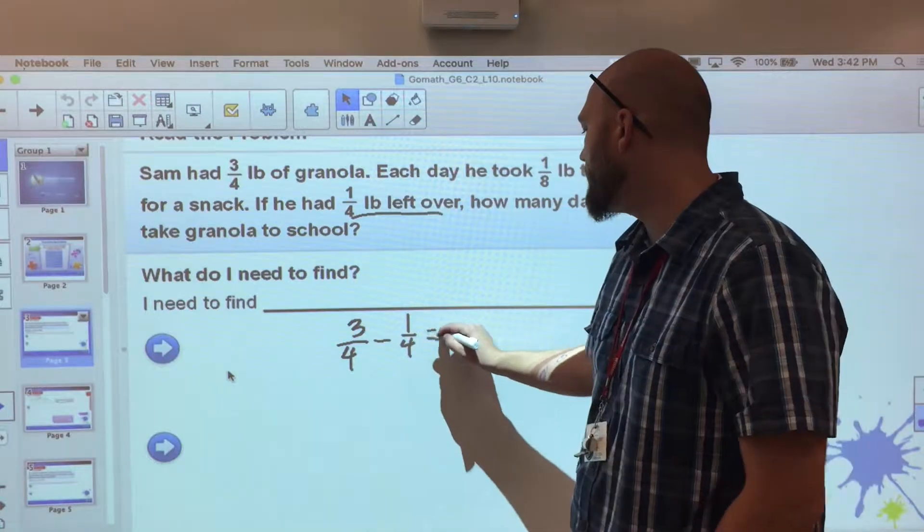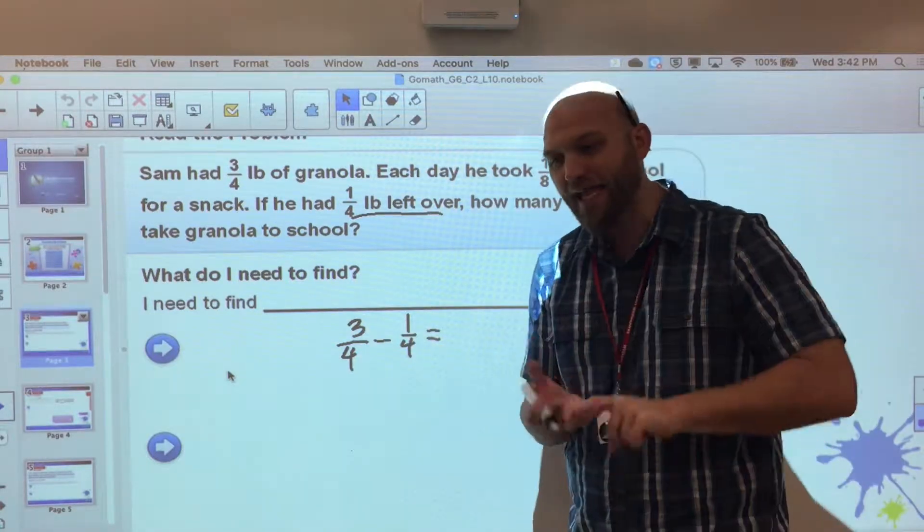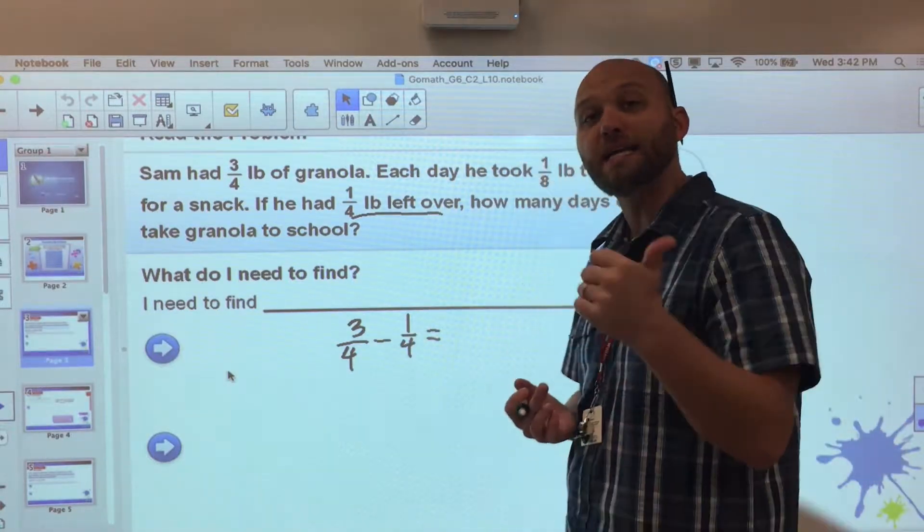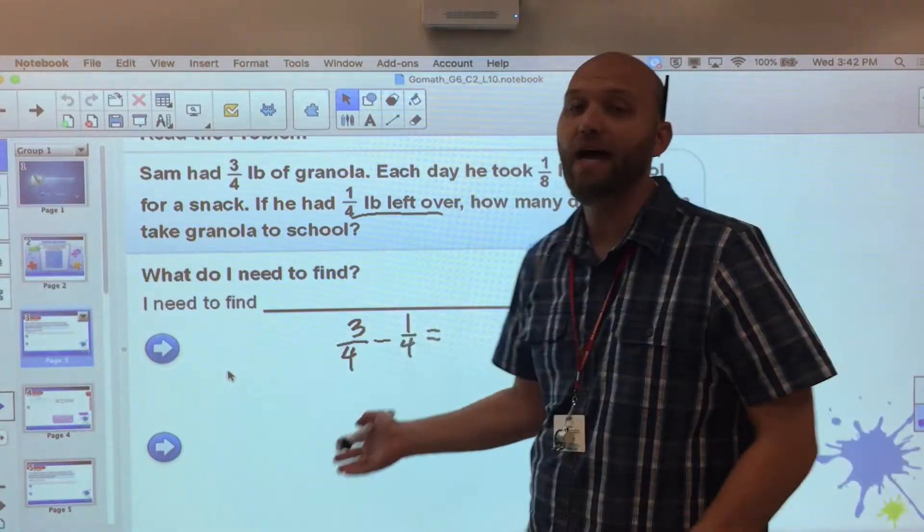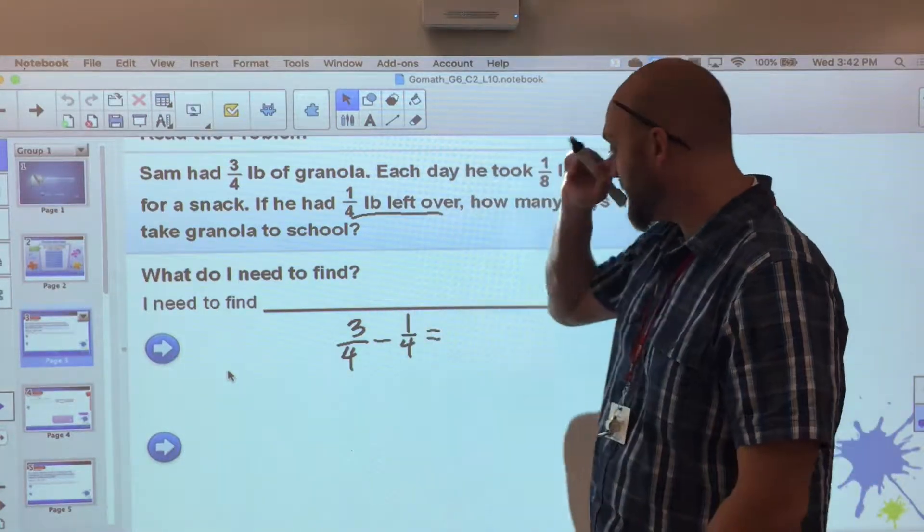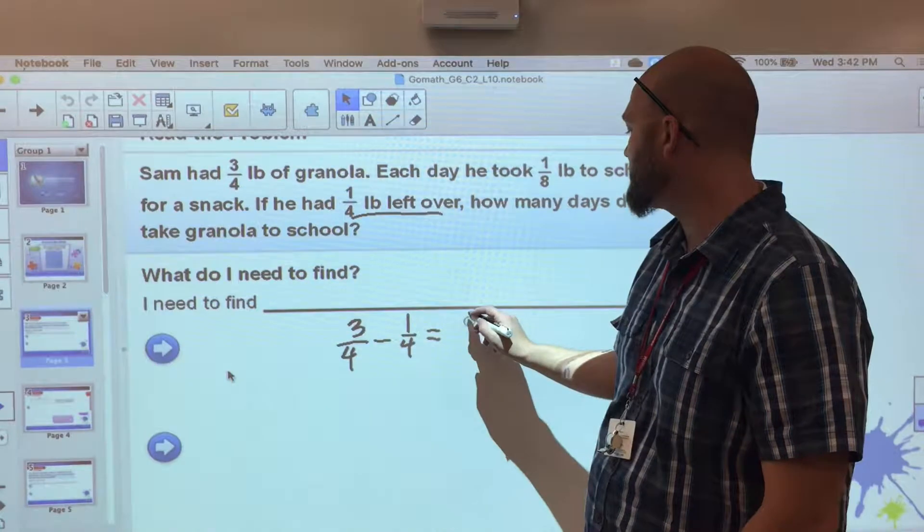Three-fourths minus one-fourth. Since I am adding or subtracting with fractions, I need a common denominator and this one already has one: it's four. So we're taking three-fourths, subtracting one-fourth, and that leaves me with two-fourths left. But two-fourths is what he actually took to school.